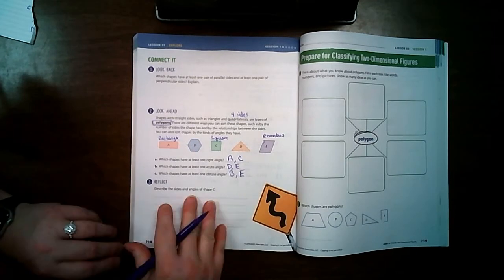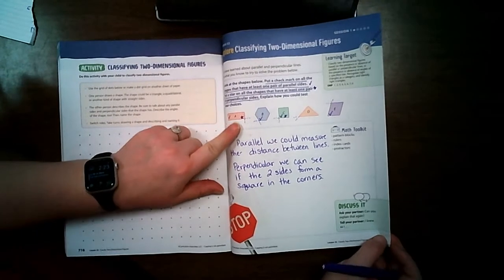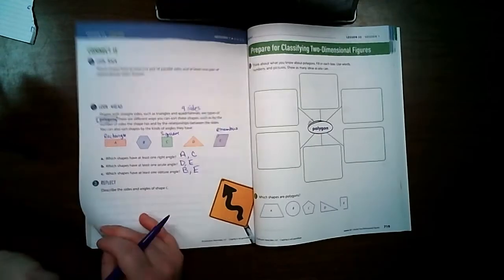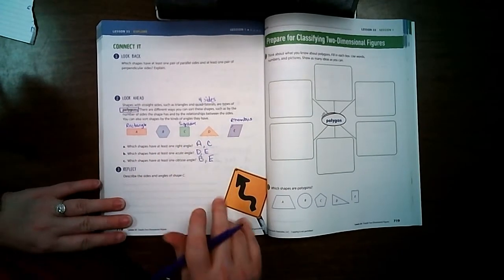So first we... On the front page, we classified the shapes by the types of lines they have. And on this page, we determined by their angles. What type of angle they have.